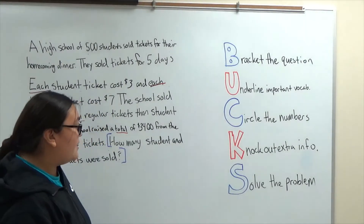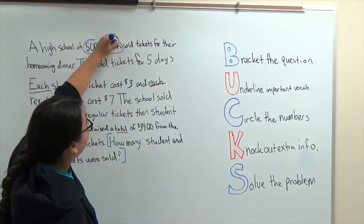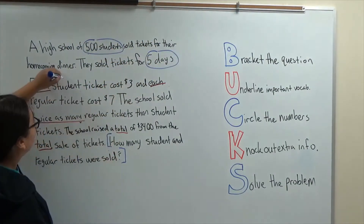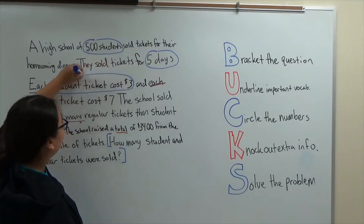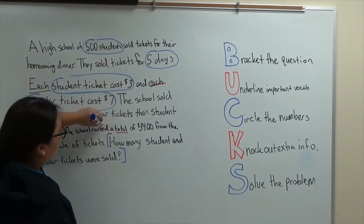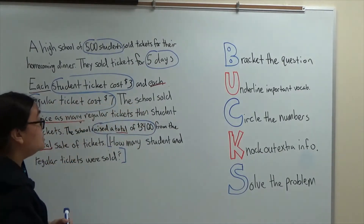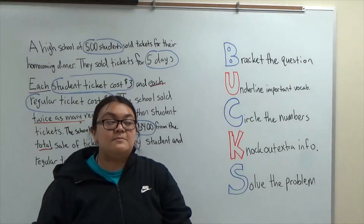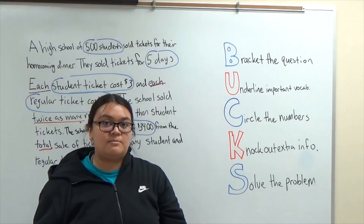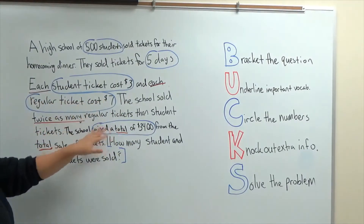Next we have C — circle the numbers. So we know we have five hundred students, they sold for five days, student tickets cost three dollars, regular tickets cost seven, and they raised a total of three thousand four hundred dollars. Doing this allows us to know which number goes with what, because if we just have numbers scattered throughout the problem it can be hard to figure out what goes with what. So now we know what each number represents.